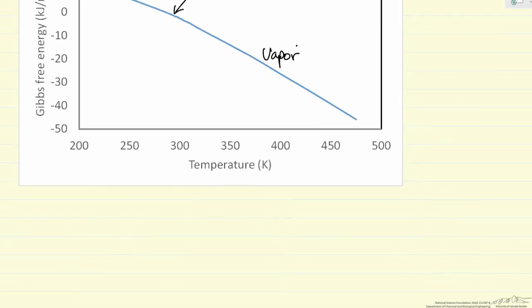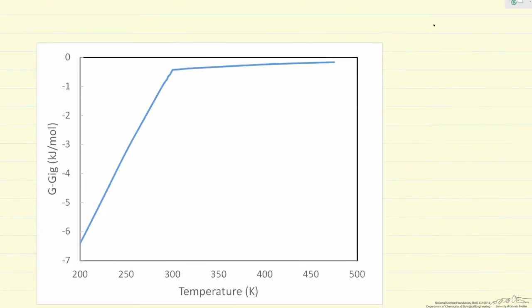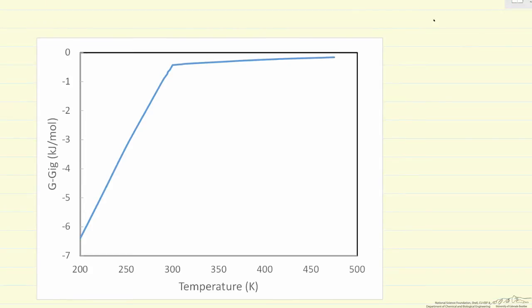Now if we look at the departure function, this is the difference between the Gibbs free energy and the Gibbs free energy if the species—in this case propane—were an ideal gas at the same conditions.